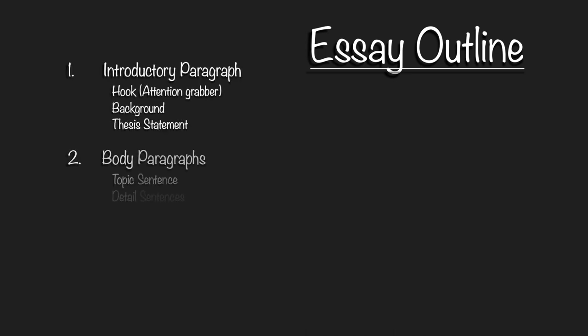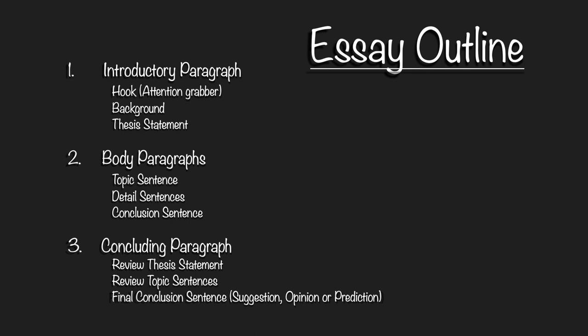First, let's take a look at the essay outline. We said that the essay is divided in three parts. The first paragraph is called the introductory paragraph, in which we have a hook, background information, and thesis statement, which is the most important part of an essay. The second paragraph is a body paragraph, or body paragraphs — there can be as many paragraphs as you want here. We have a topic sentence, detailed sentences, and the last one is called a conclusion sentence.